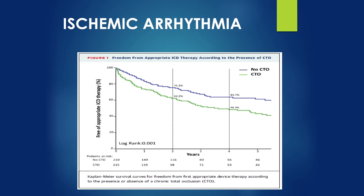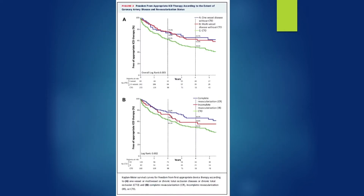In one study, patients who had no chronic total occlusion had much less need for ICD therapy compared to patients with CTO. The blue line indicates no chronic total occlusion versus green line, which indicates patients with chronic total occlusion. Patients who had complete revascularization compared to patients who had CTO were much less likely to require ICD therapy.